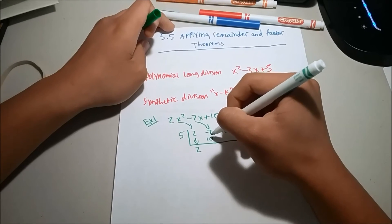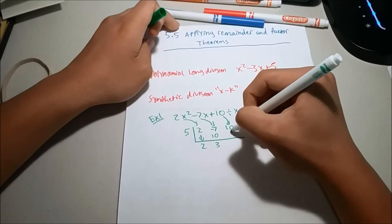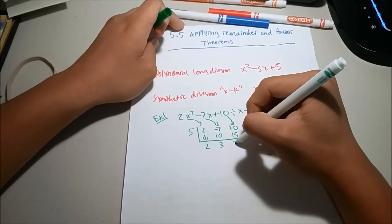Now we'll bring 2 down. 5 times 2 is 10. Negative 7 plus 10 is positive 3. 5 times 3 is 15. That gives us 25.